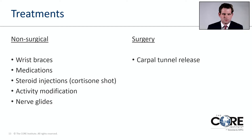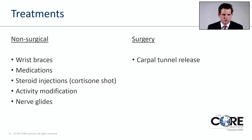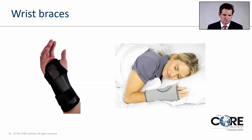Treatments for this condition break down into two camps: non-surgical treatment and surgical treatment. Non-surgical treatment consists of wrist braces, medications, steroid injections or cortisone shots, activity modification, and nerve glides. Surgery is comprised of a procedure called carpal tunnel release. Wrist braces are commonly worn at nighttime and are commonly a first-line treatment — they work by keeping the wrist straight while we sleep, which helps keep pressure low inside the carpal tunnel.